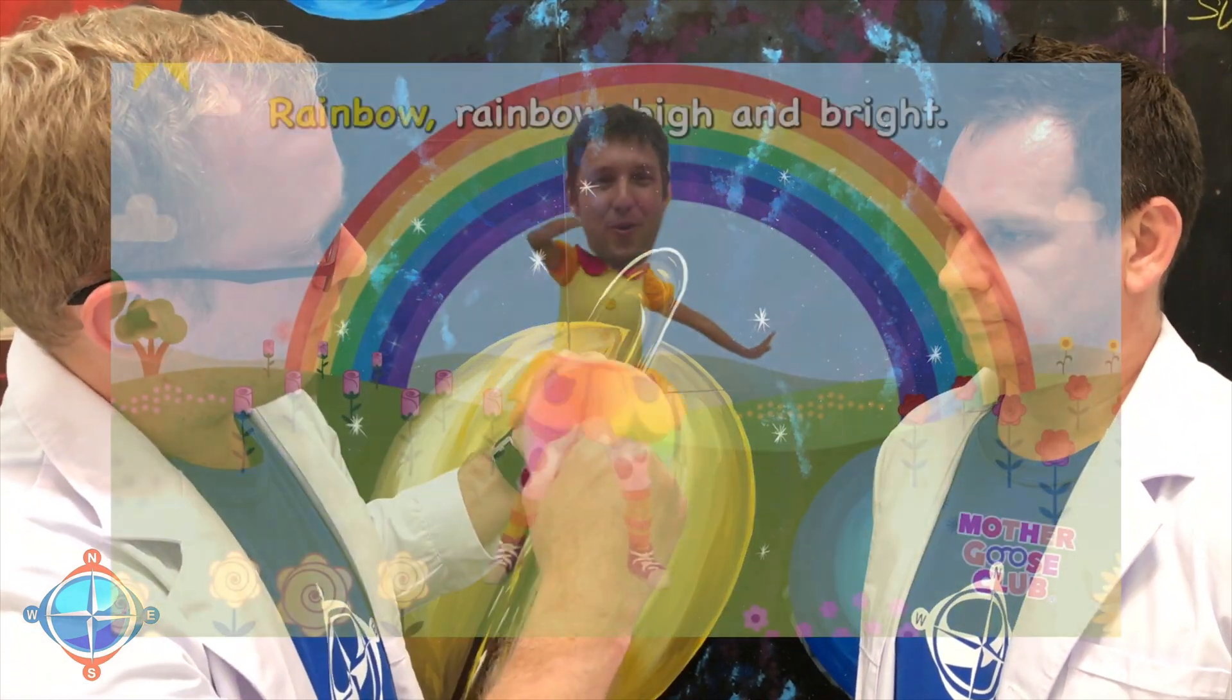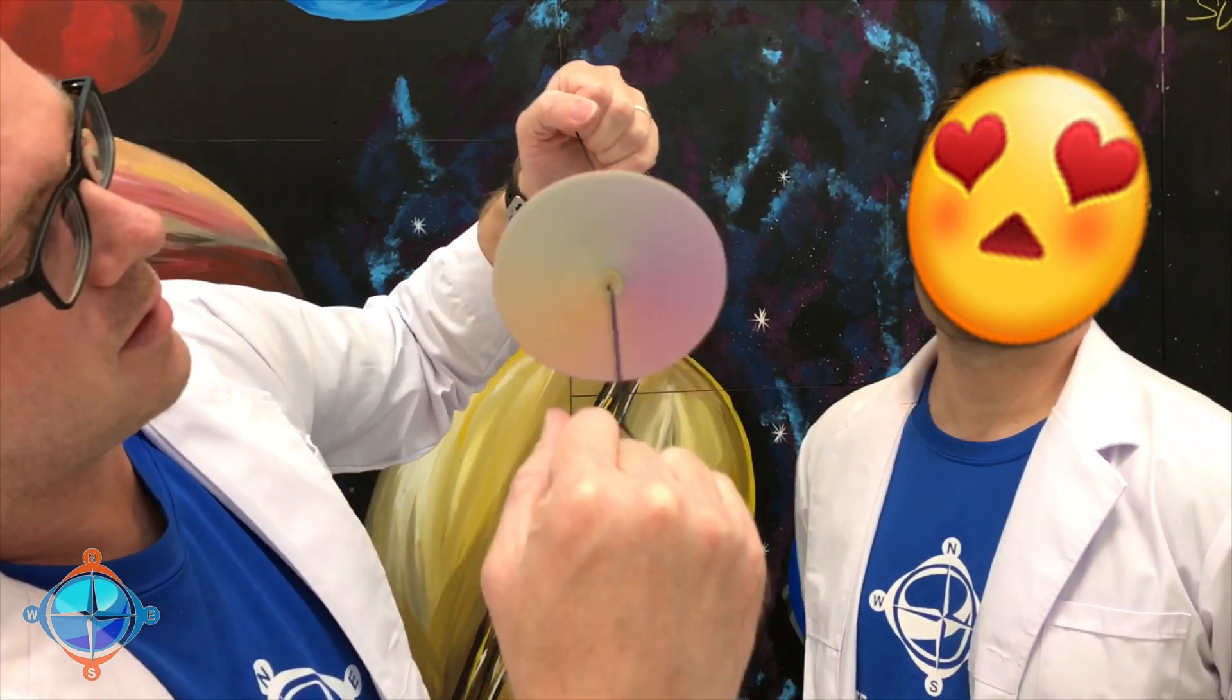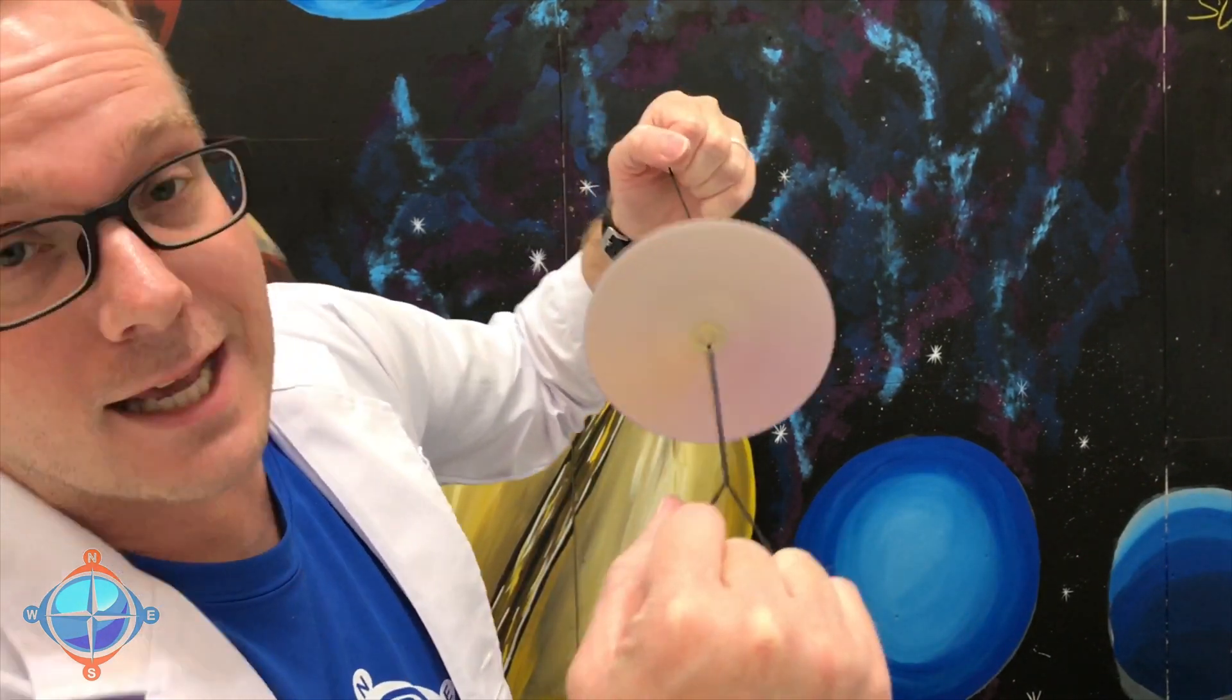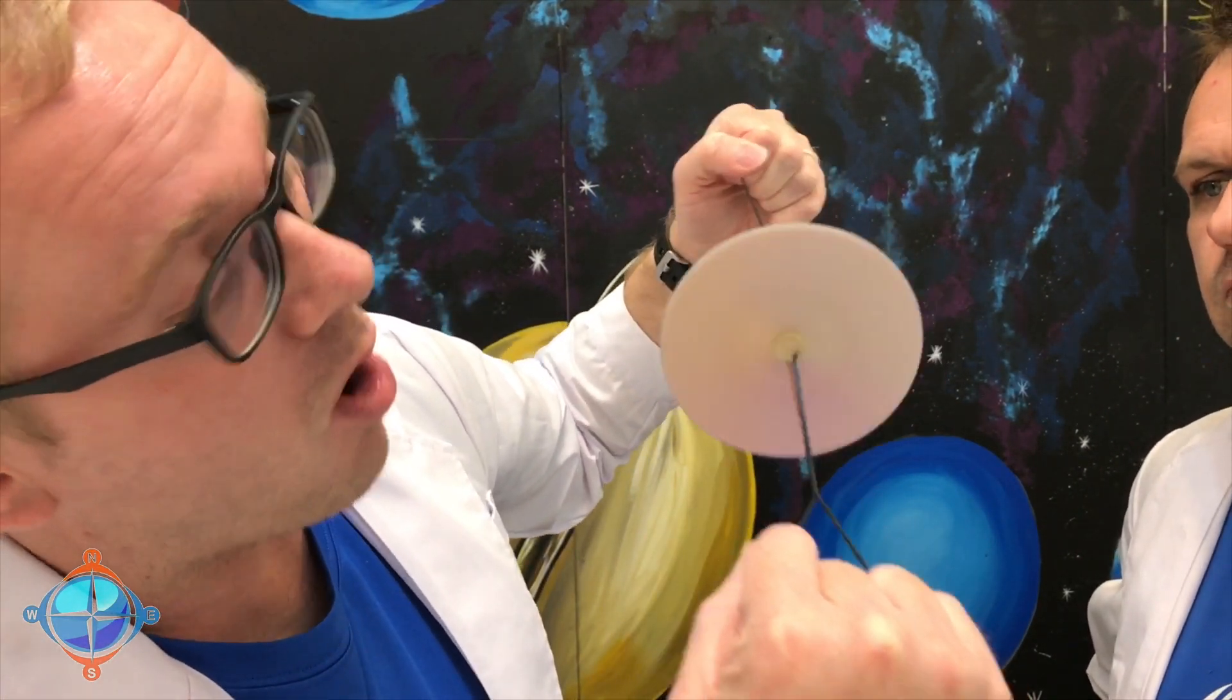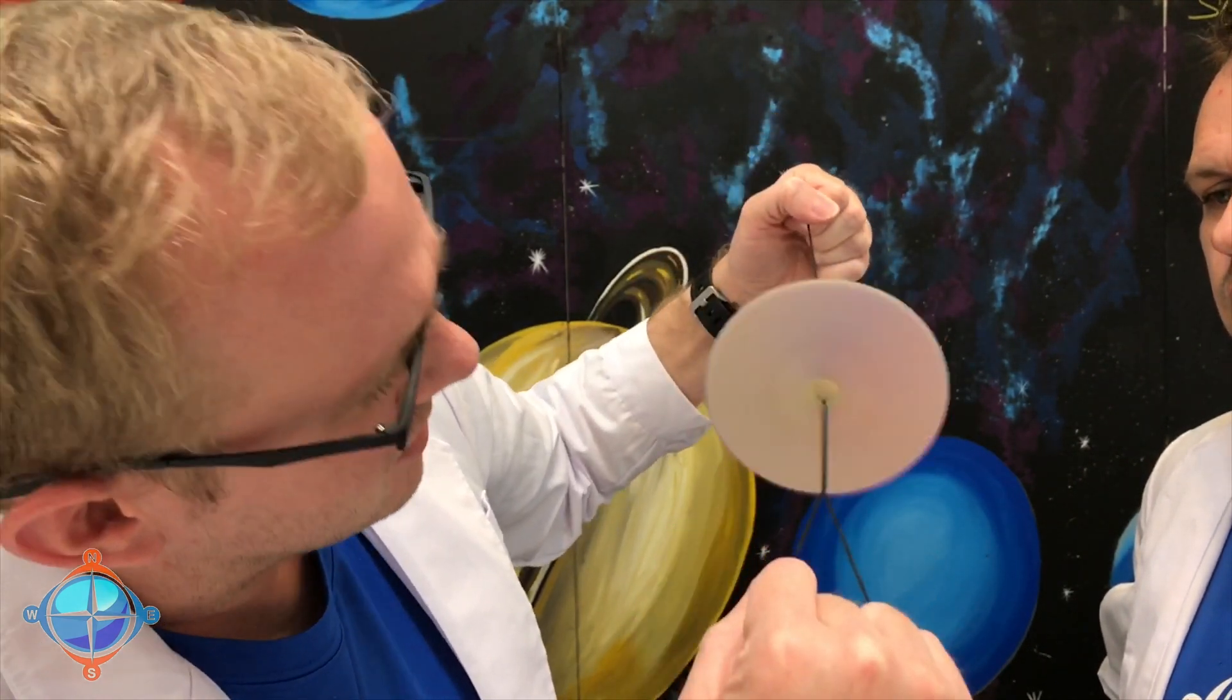So, here is our rainbow. And if you look carefully, when all the colors at the same time are spinning around so fast, then we see it in our eye, like all at the same time. And it actually starts to look, well, looks a little gray.